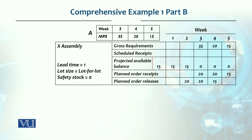There are 35 units in the third week, 20 units in the fourth week, and 15 units in the fifth week. We will determine the gross requirement here: 35 units in the third week, 20 units in the fourth week, and 15 units in the fifth week.